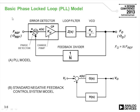Looking at the basic phase locked loop model in diagram A, and for comparison a standard negative feedback control system model in diagram B — the standard model works on the principle of an error detector, an error signal with some forward gain going to an output, with a portion of the output fed back to the negative input of the error detector. This is very much the standard architecture of an operational amplifier, and it closely resembles the basic model for a PLL.